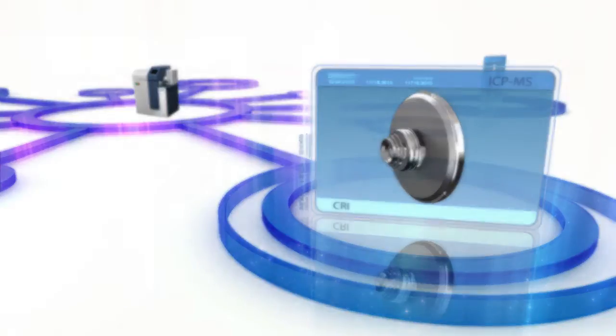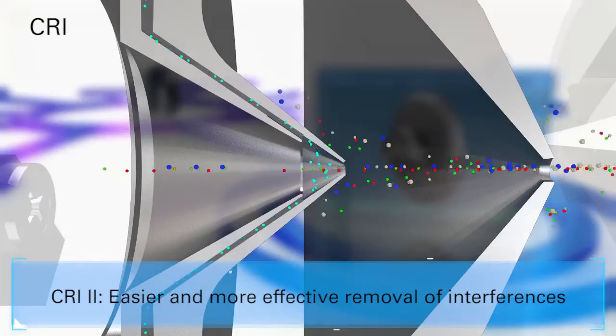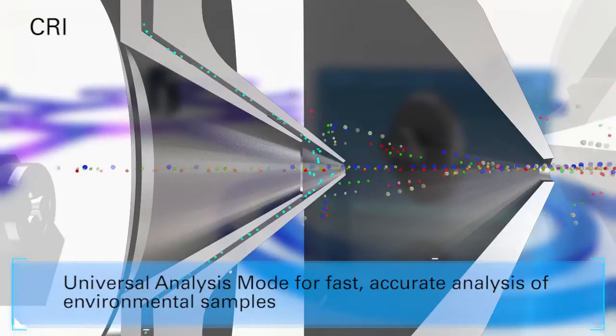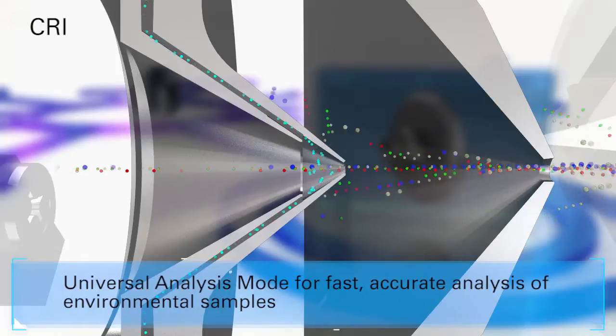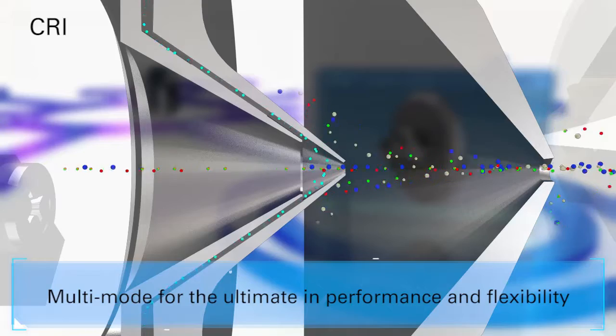CRI. The Aurora's next-generation collision reaction interface, or CRI, provides even simpler and more effective removal of spectroscopic interferences formed by plasma gases and sample matrix components. Straightforward interface management.